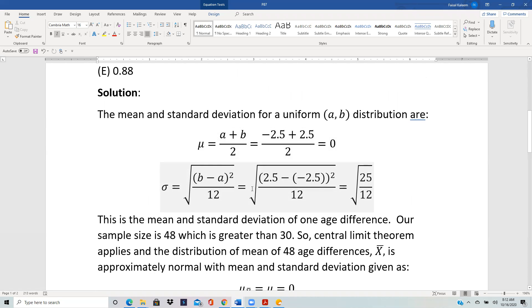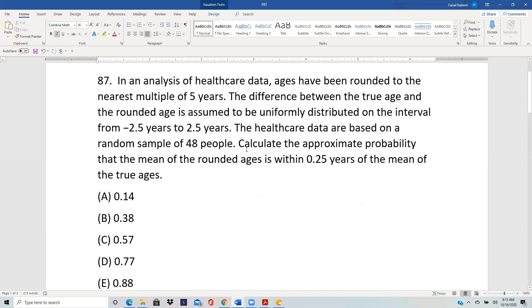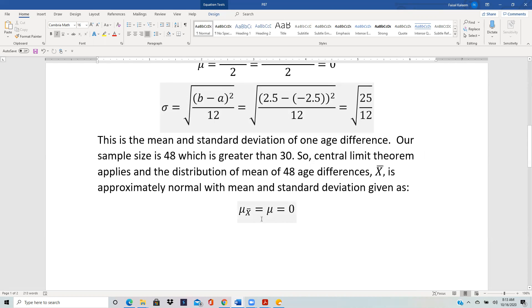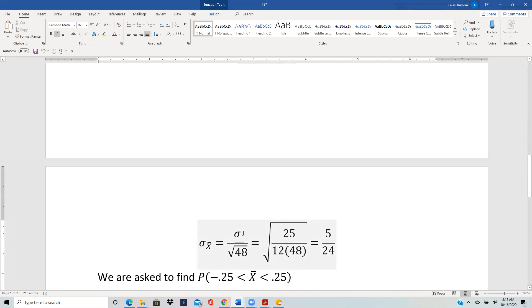This is the mean and standard deviation of one age difference. For the sample of 48 ages, by central limit theorem, the mean of the sample means is the same as the original mean of one, which is 0. The standard deviation is the standard deviation of one divided by the square root of sample size, which ends up being 5/24.